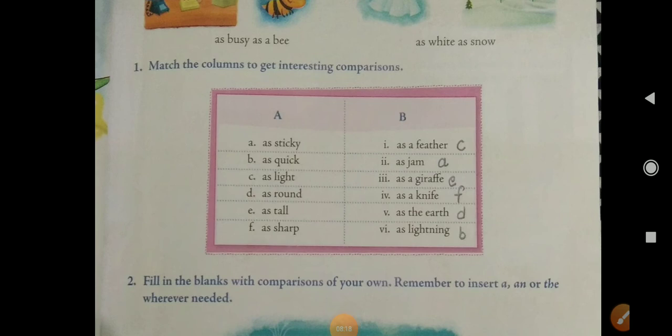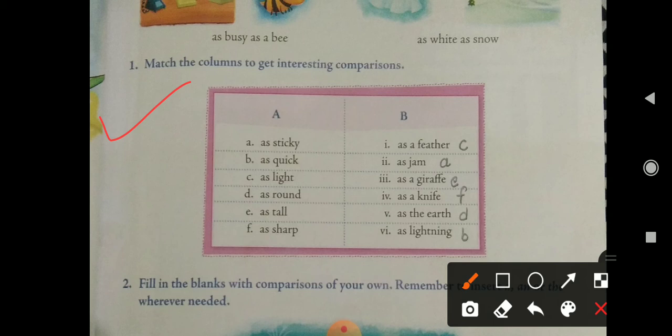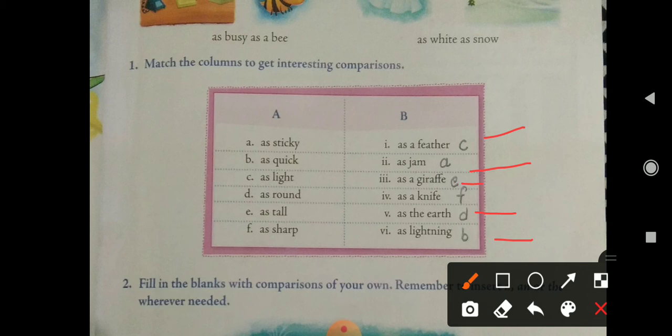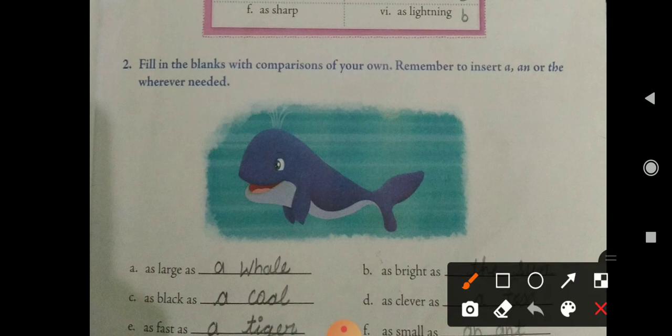Now look at the matching exercise — 'Match the columns to get interesting comparisons.' You are supposed to write the number only. As sticky as — jam; as quick as — lightning; as light as — a feather; as round as — the earth; as tall as — a giraffe; and as sharp as — a knife.